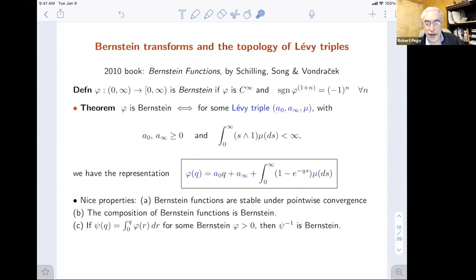The derivative of such a function, phi prime, is a Laplace transform basically. These are primitives of Laplace transforms. These functions have a lot of nice special properties. They're stable under point-wise convergence. The composition of two Bernstein functions is Bernstein. Another useful property is the primitive of a non-trivial Bernstein function has an inverse that's Bernstein.